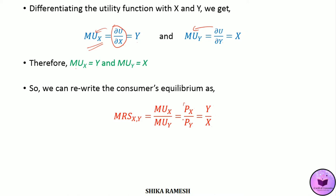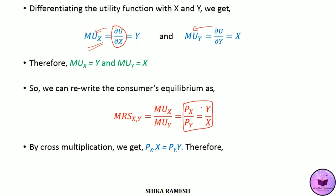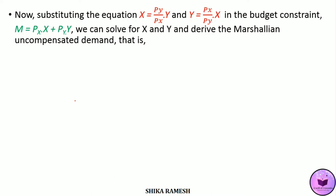By cross multiplication we get Px multiplied by x is equal to Py multiplied by y. From this equation we can solve for x and y: x is equal to Py by Px multiplied by y, and y is equal to Px by Py multiplied by x. Substituting these two equations into the budget constraint we can solve for the Marshallian uncompensated demand functions.